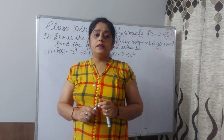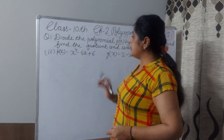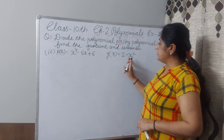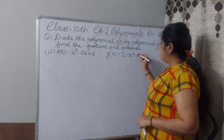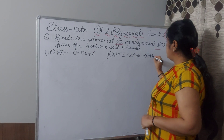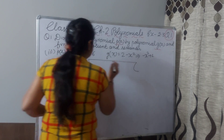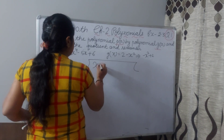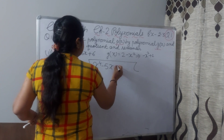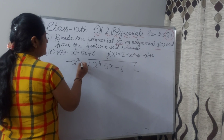Now question 1, third part. Check the dividend — it is in standard form. Check the divisor — it is not in standard form. You can write minus x² first and then plus 2. Now we will divide P(x) by G(x). Write P(x): x⁴ minus 5x plus 6, and you have to divide by minus x² plus 2.